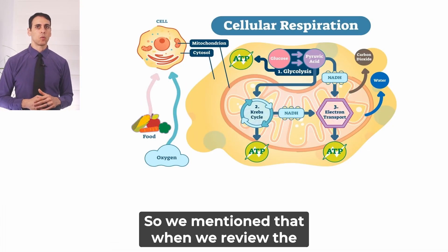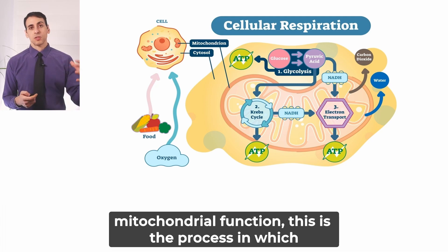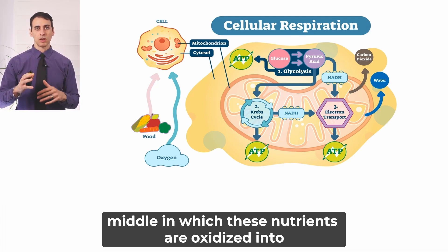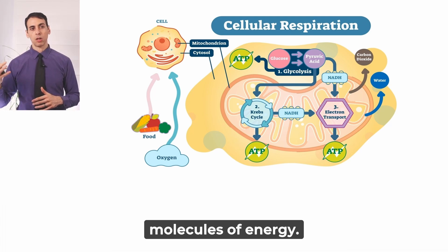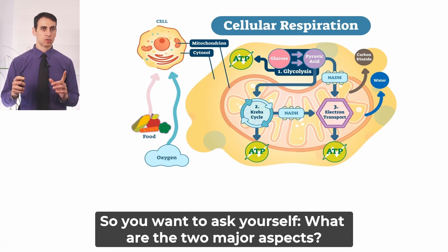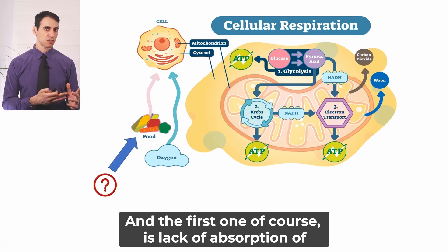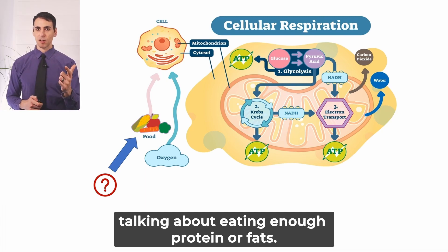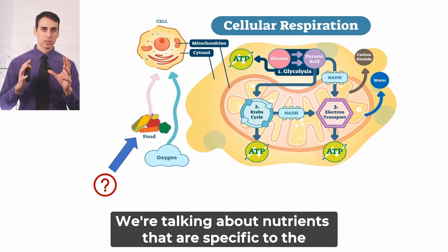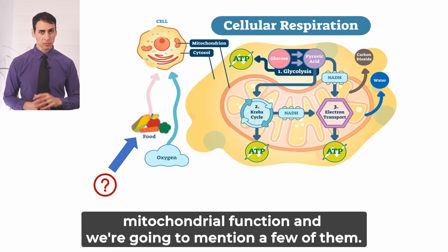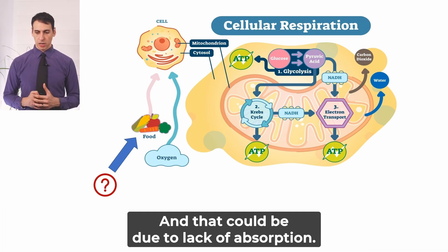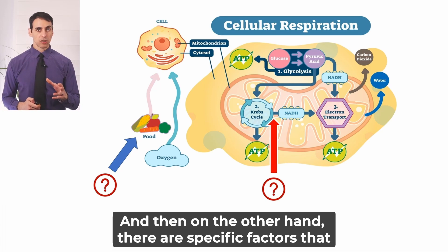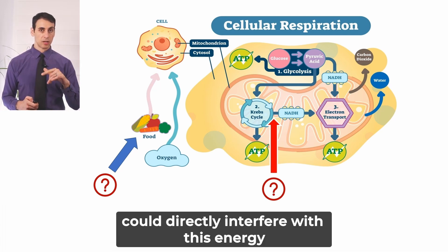When we review the mitochondrial function, this is the process in which nutrients and oxygen come in and are oxidized into molecules of energy. The first major aspect is the lack of absorption of certain nutrients required by the mitochondria — and we're not just talking about glucose or eating enough protein or fats. We're talking about nutrients specific to mitochondrial function. That could be due to bioavailability changes in the patient's gut. On the other hand, specific factors can directly interfere with this energy production process.